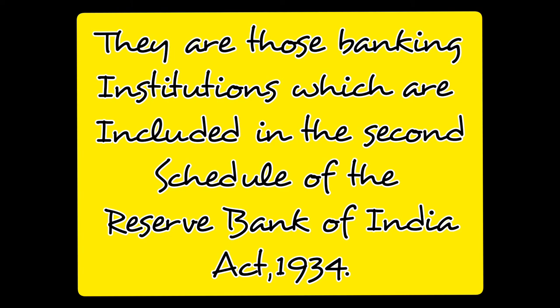The conditions that are to be followed by a banking institution in order to be included in this act are: Number 1 — the paid-up capital and reserves of the bank should not be less than Rs. 5 lakhs, that is the minimum reserves to be maintained is Rs. 5 lakhs. Number 2 — the bank must satisfy the Reserve Bank that its affairs are not conducted in a manner detrimental to the interest of the depositors, meaning it should be beneficial to savers, not harmful.